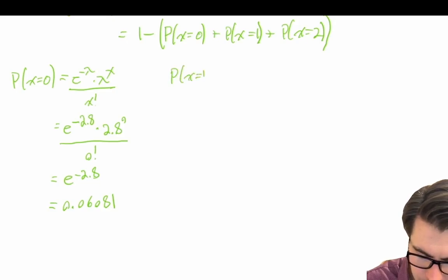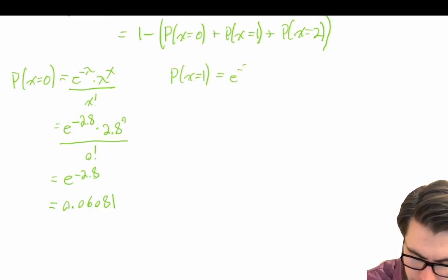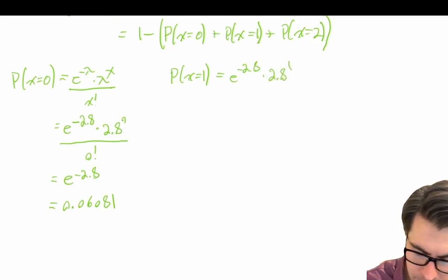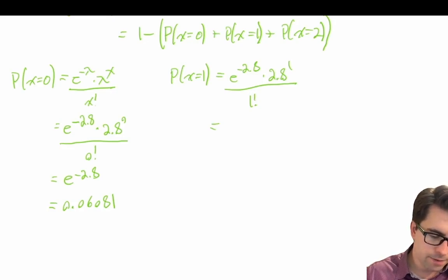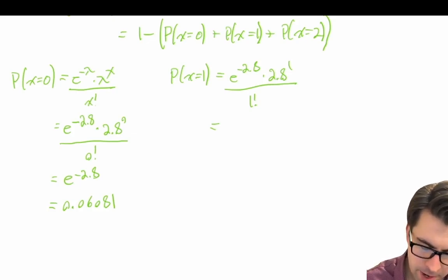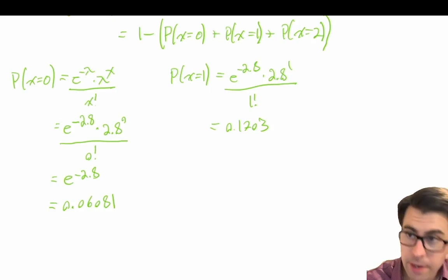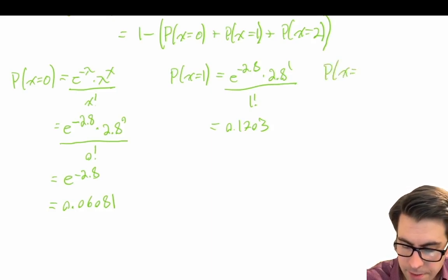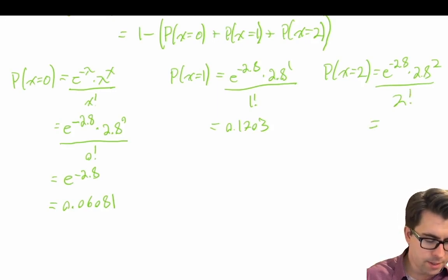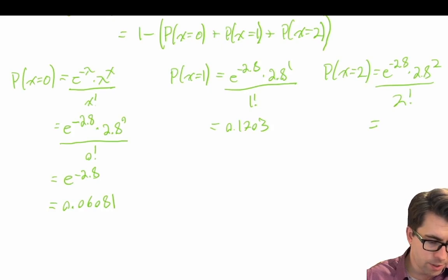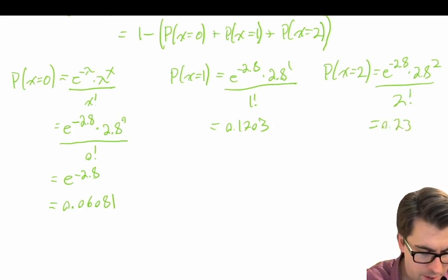P(X=1) is e to the power of negative 2.8, times 2.8 to the power of 1, divided by 1 factorial — which is 0.1703. Then P(X=2) is e to the power of negative 2.8, times 2.8 to the power of 2, divided by 2 factorial, which gives us 0.2384.